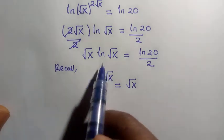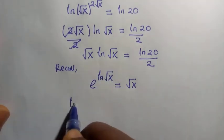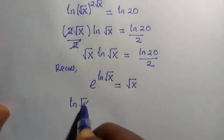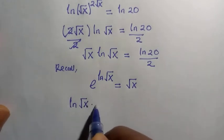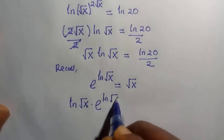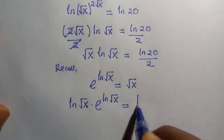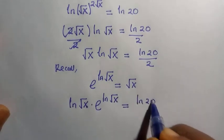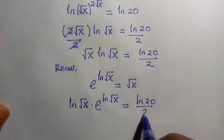Then from here, we can write this first as ln root x, which is multiplying exponential of ln root x equals ln 20 divided by 2.